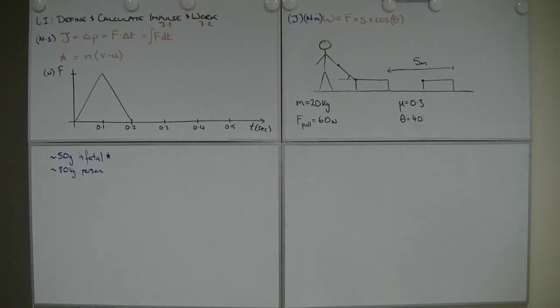Okay, define and calculate impulse and work. Impulse is 7.1, work is 7.2. So, of course, because it makes perfect sense, impulse, the letter that we use for that is J, unlucky again.